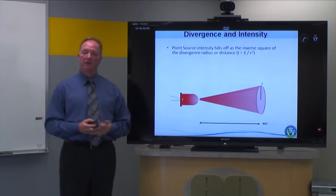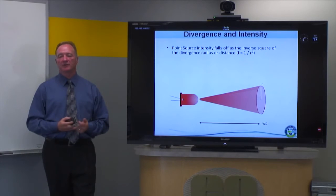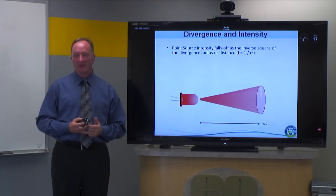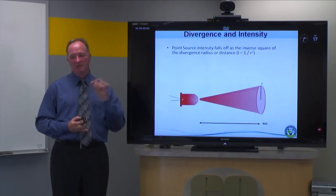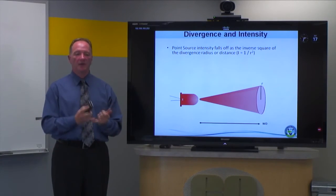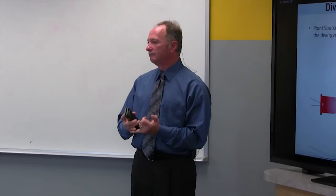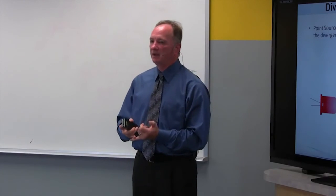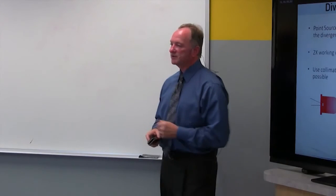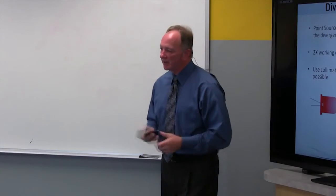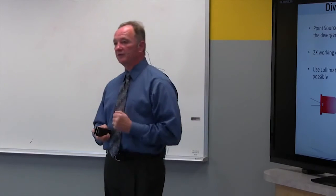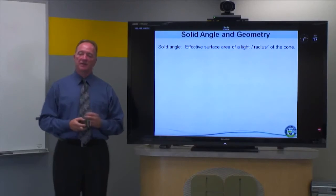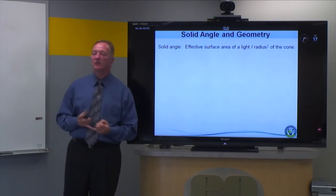Another important key point: point source intensity falls off as the inverse square of the distance away from the sample. The bottom line is you want to keep your light as close as possible to your sample. If you're at distance x with 4x intensity, going to 2x working distance gives you only 1x intensity — it drops off very dramatically, it's a square function.